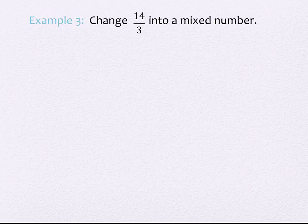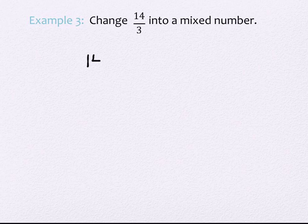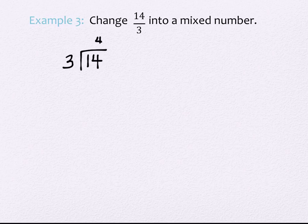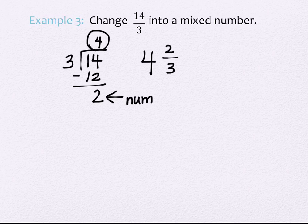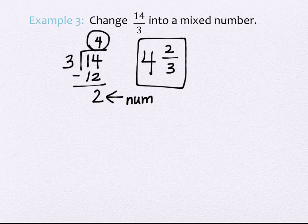So first we're going to learn how to change something improper — meaning it's got a bigger value on top than on bottom — into a mixed number. You divide: the numerator goes underneath the division sign, the denominator goes on the outside. How many times will 3 go into 14? 4. What is 4 times 3? 12. When I subtract I get 2. So 4 is the whole number part, 2 is my new numerator, and the denominator stays the same as before — giving 4 and 2 thirds.